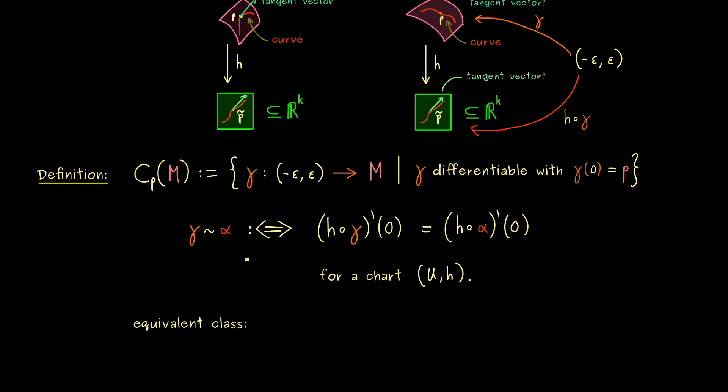Okay, now by having an equivalence relation, you should also know that we immediately get equivalence classes. This is a box where we put in all the elements that are equivalent to gamma. In other words, all the curves alpha that fulfill this property here are inside this set. So we see, all the curves in this box have the same tangent vector. Therefore, we can simply say, this box represents a tangent vector.